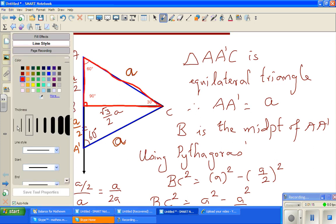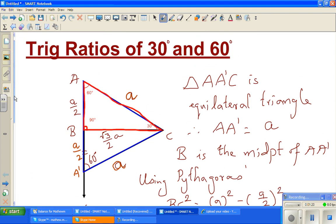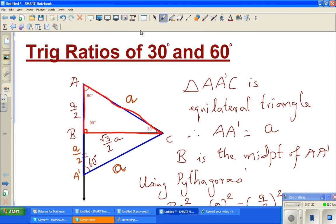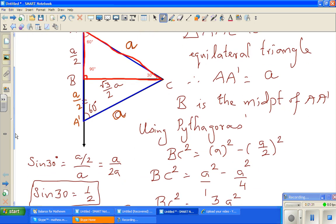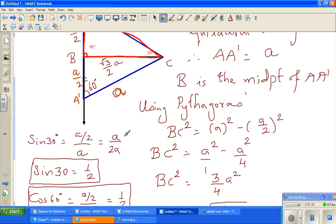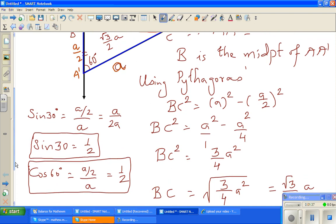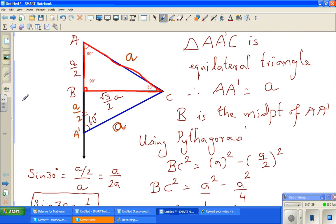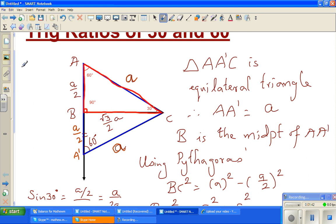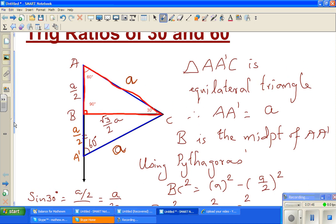Now let us look at the other angle. So we wanted to prove sin 30 and we want to find the trig ratios of sin 30 and 60 degrees. So sin 30 we saw is A by 2 and cos 30 is A by 2. So we have done, so let us say now sin 60.